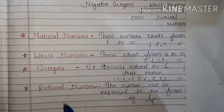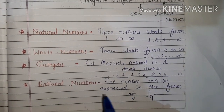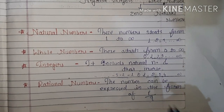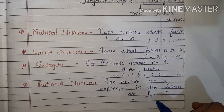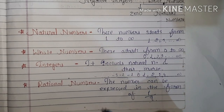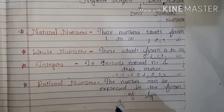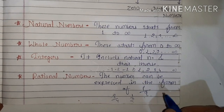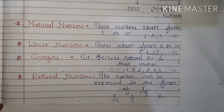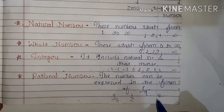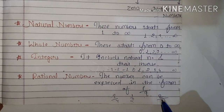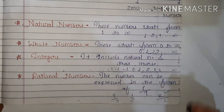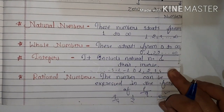What is a rational number? Rational numbers are numbers that can be expressed in the form of p upon q. For example, three upon four, or one upon two. Even the number two is rational because we can write it as two upon one — so two can be represented in p upon q form.